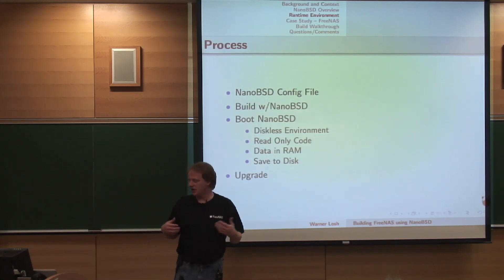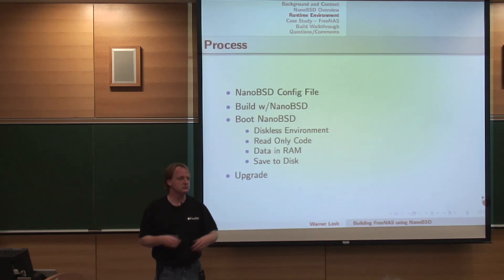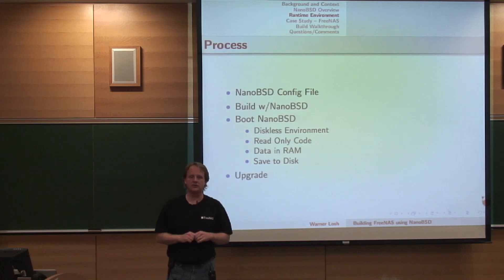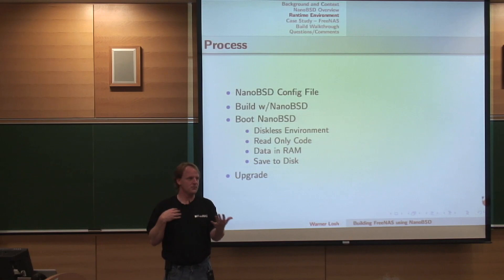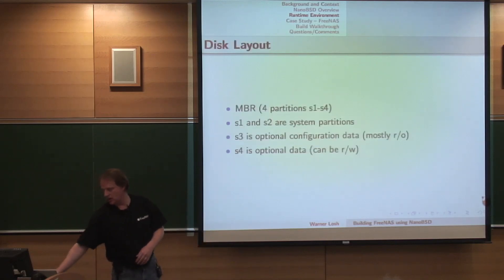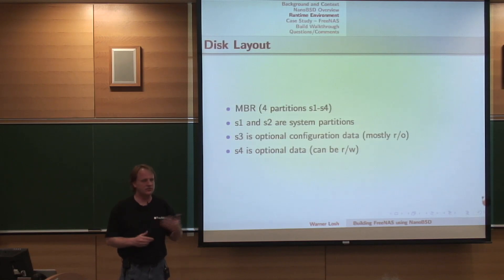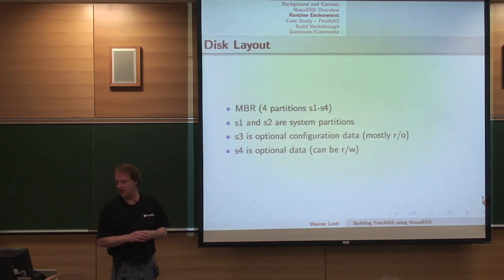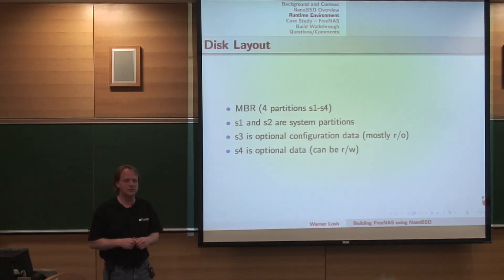When you're building a system with NanoBSD, you create a NanoBSD configuration file, you build with it, and you boot it. One nice thing is you can configure it so it reserves one partition for upgrades — you install into one partition, run it for a while, want to upgrade, install into the second partition, test boot it. If it works, great — you ping-pong over to that. If not, you can go back to your original partition. The disk layout has four partitions: two for the OS, one that stores configuration data after you boot, and a fourth optional partition that many people use for read-write data.